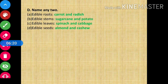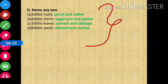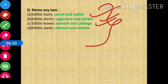In section D, name any two. You have to give two examples of each. A: edible roots — carrot and radish. B: edible stems — sugarcane and potato. C: edible leaves — spinach and cabbage. D: edible seeds — almond and cashew.